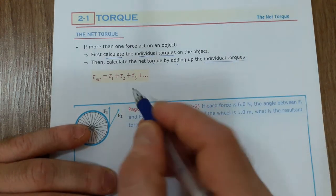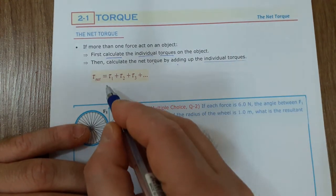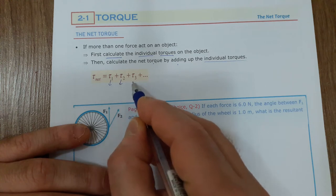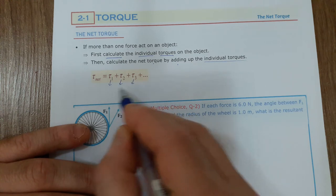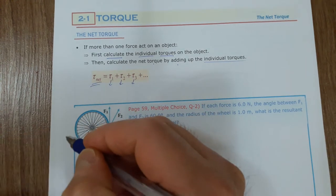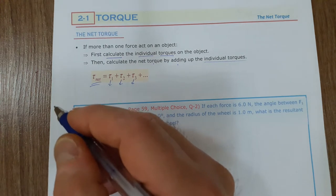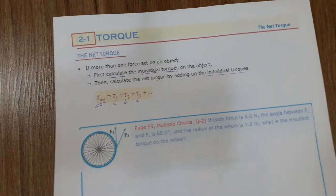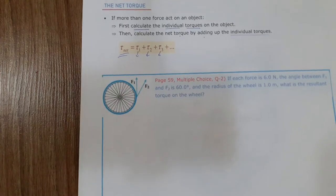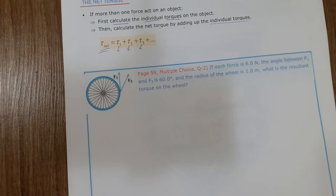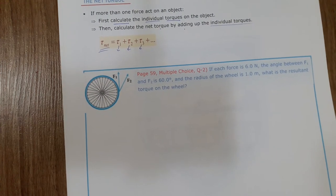Assume that there are three forces acting on an object. Each force produces a torque — torque one, torque two, torque three — then add them all to calculate the net torque acting on the object. Now let's solve a problem. It's one of the multiple choice questions, very popular in ministry exams.